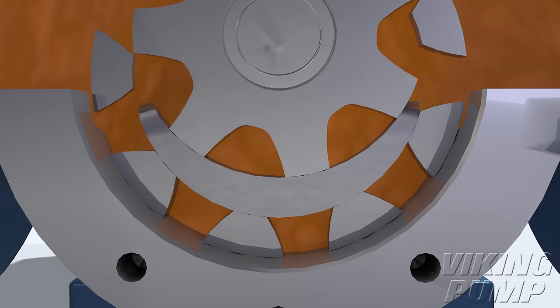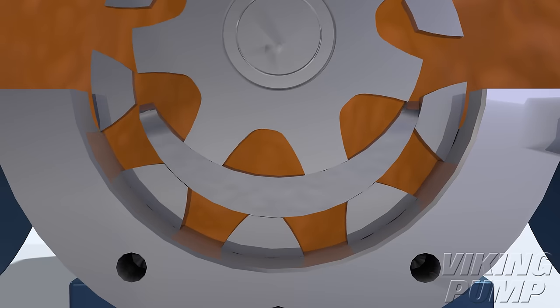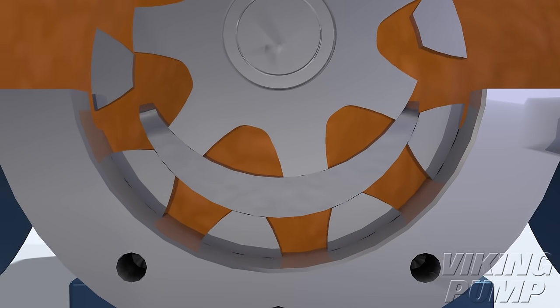Liquid is prevented from returning to the suction side by the crescent located on the head of the pump, acting as a seal between the suction and discharge ports.